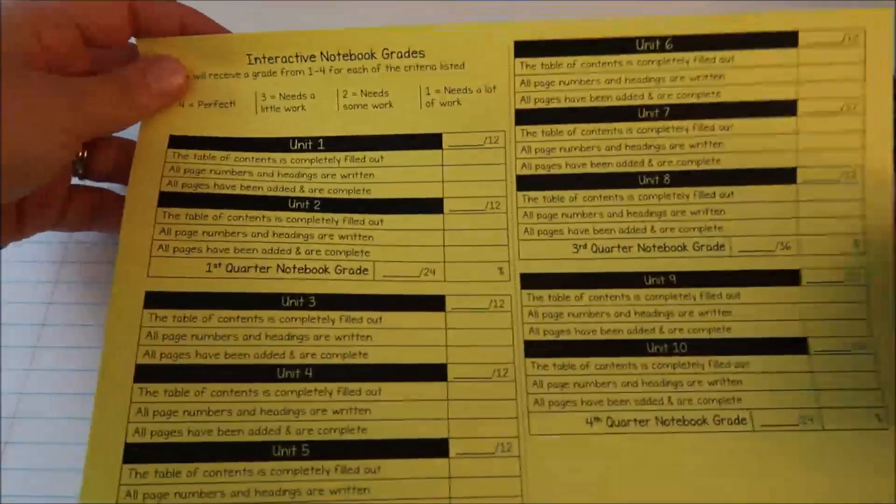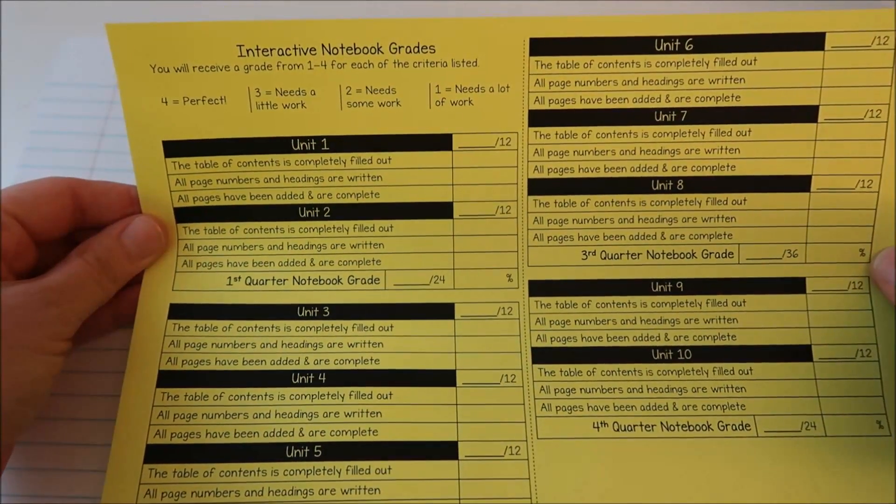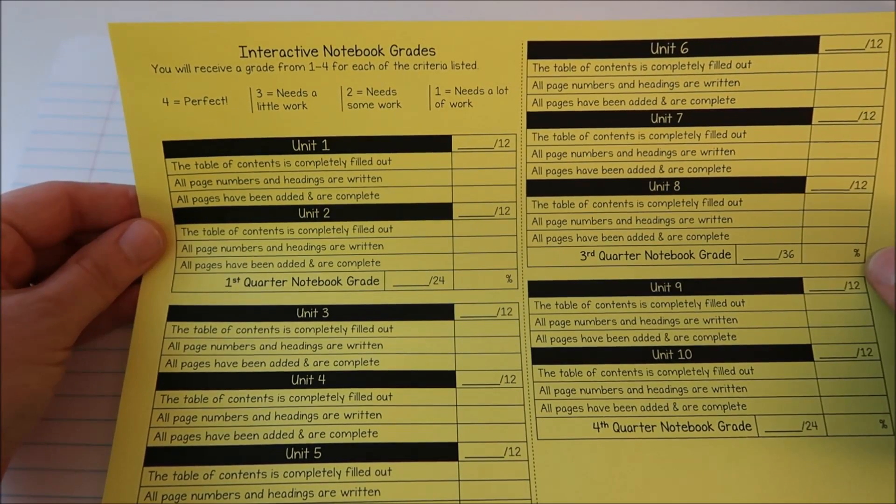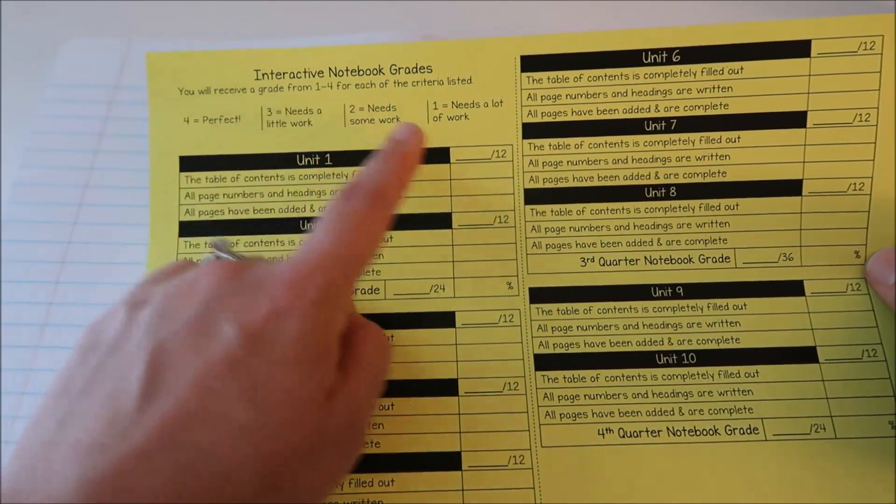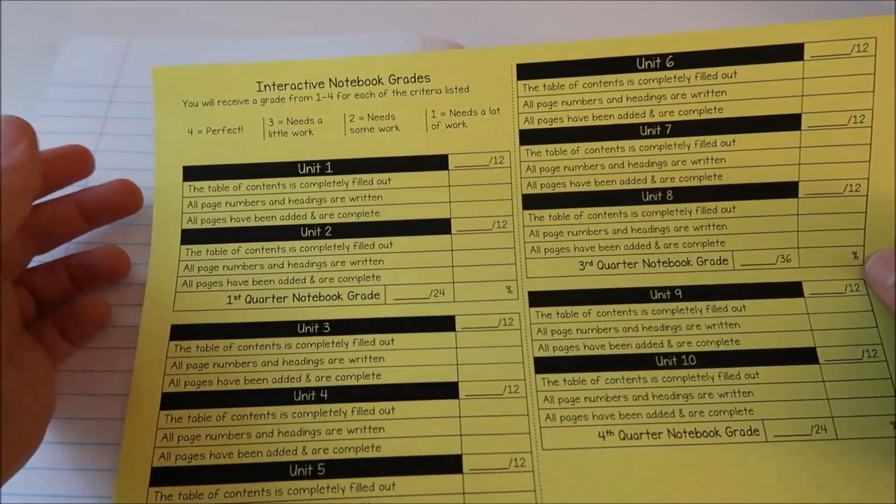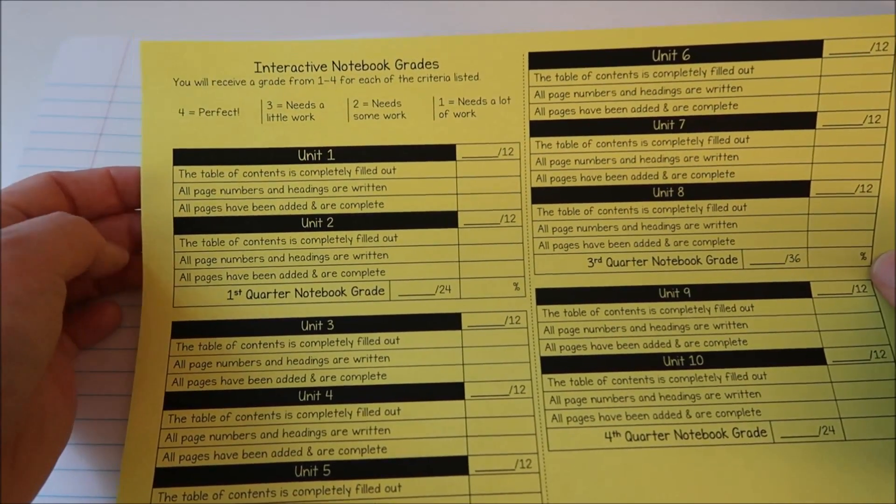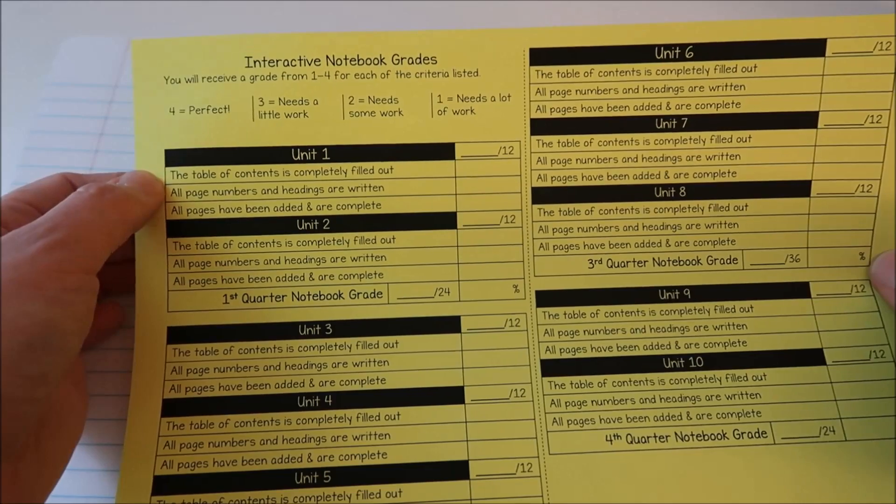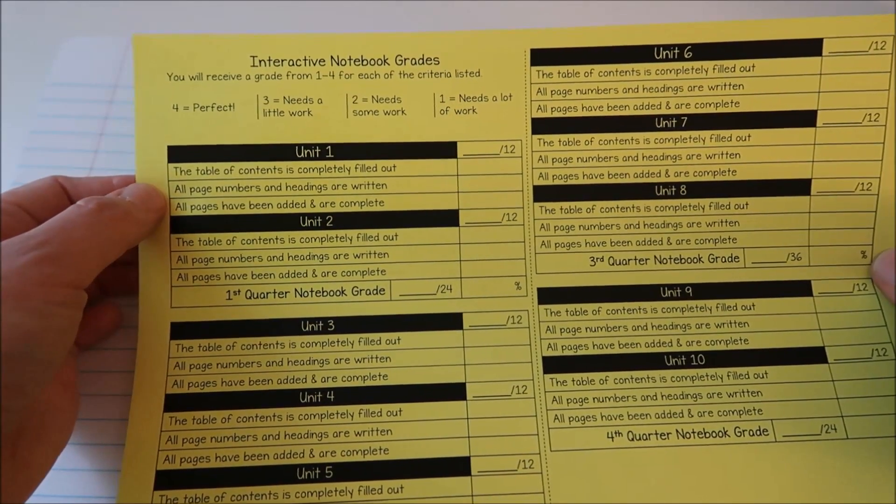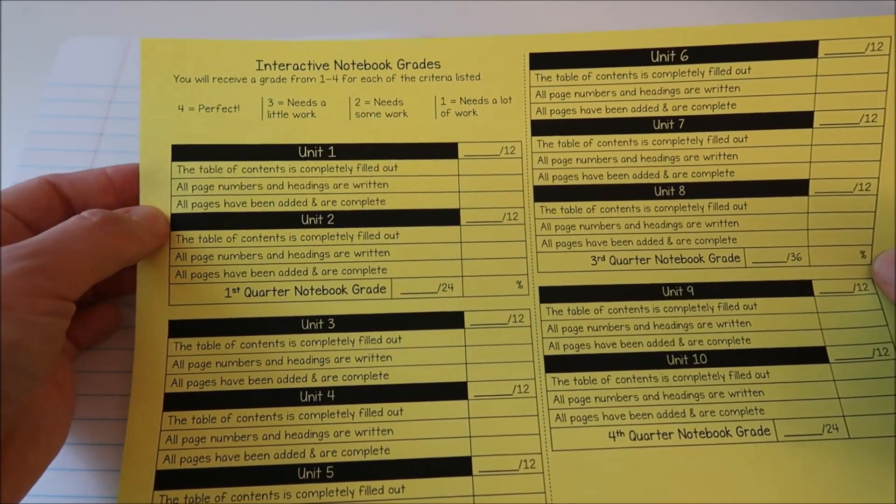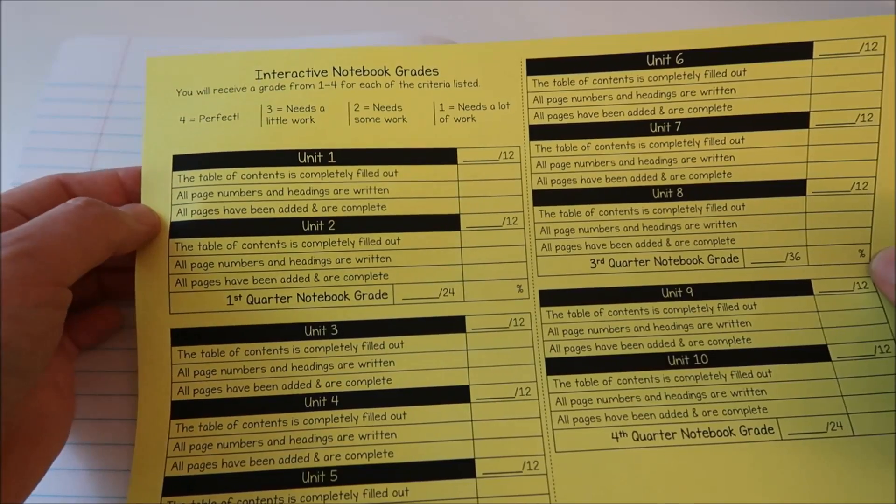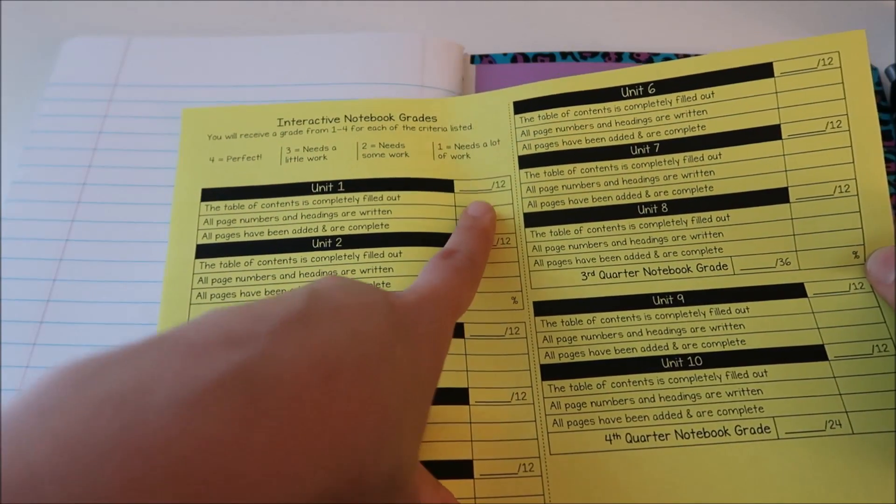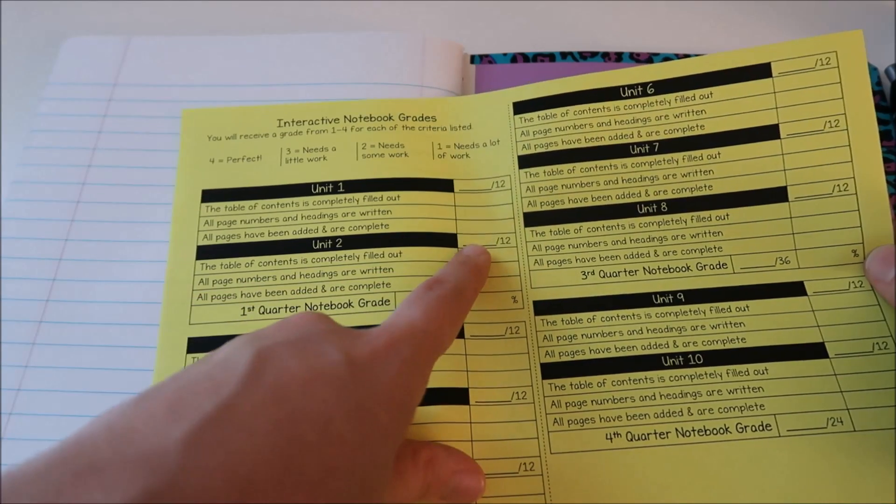The last thing is going on the last page of the notebook. I grade my students and this is what the rubric looks like. They get rated in three categories on a one to four scale, four being that everything is perfect, one being that a lot of work is needed, zero if something's completely missing. The three things they're graded on is that the table of contents is completely filled out including the dates, all page numbers and headings are written, and then all pages have been added and are complete. So if they were to glue in a page but don't have notes filled in they're not getting full credit there.